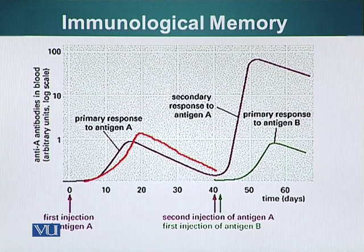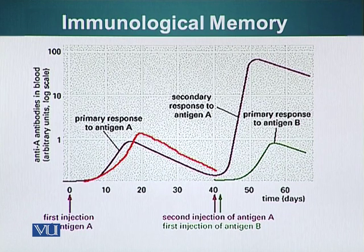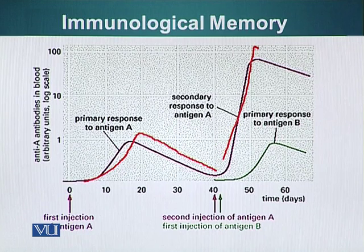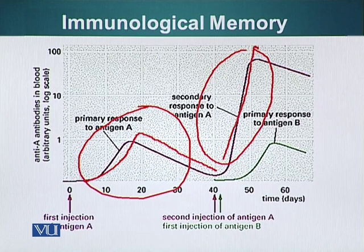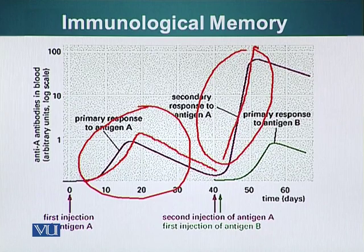At another point in time — for example, after 40 days — the animal is again given antigen A and also antigen B at the same time. As you can see, the response to antigen A is much greater compared to antigen B. This is the secondary immune response, whereas the first was the primary immune response, and the response to antigen B is also a primary immune response.